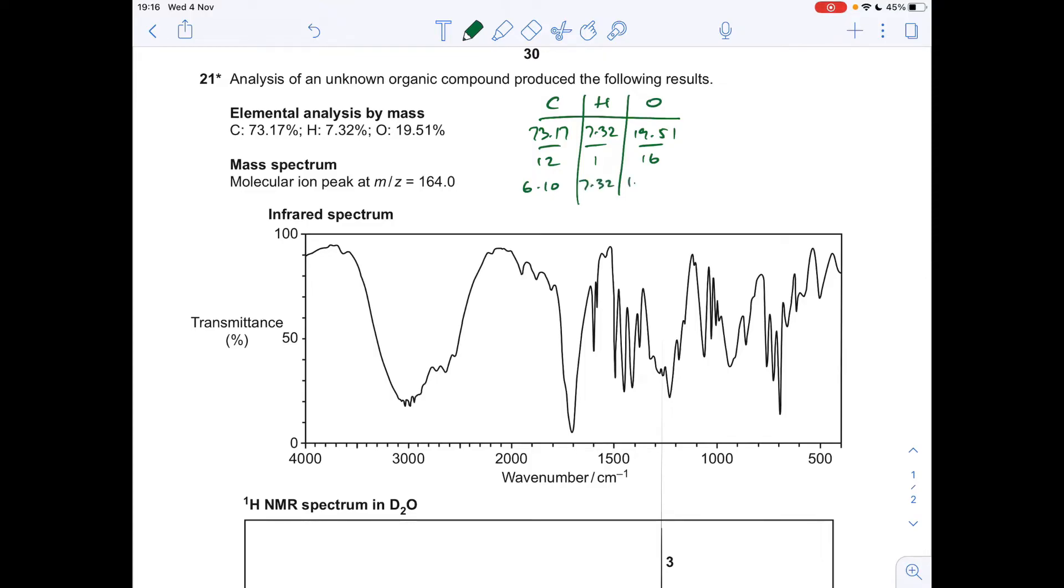So if we divide by the smallest, which is the 1.22, we'll get 1, 6, 5, so the empirical formula is C5H6O.